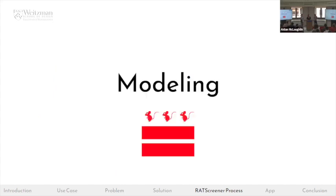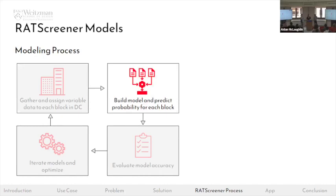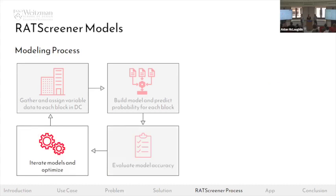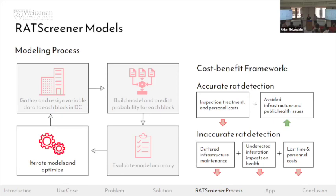We incorporated those variables into our models by first associating spatial, historic, and built environment variables to each block, building a preliminary model to predict the probability of rat detection, then evaluating the model for accuracy — defined as correctly predicted blocks divided by total blocks in DC. This process was very iterative; we tried different models, different combinations of variables, and different optimization levels. Optimization allows us to improve overall effectiveness and target more specific outcomes. We started with a cost-benefit analysis framework associating costs with correct or incorrect predictions.